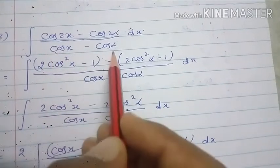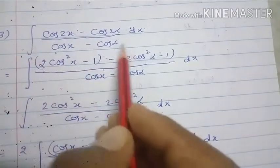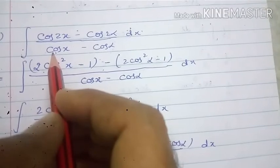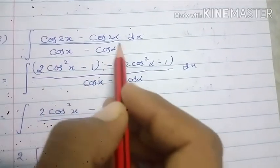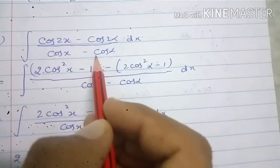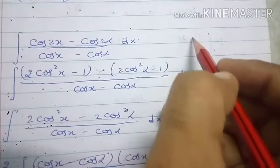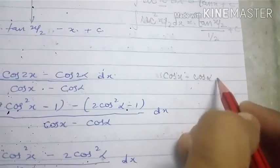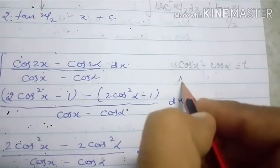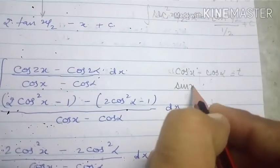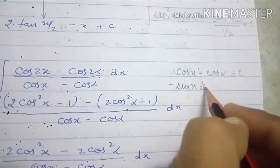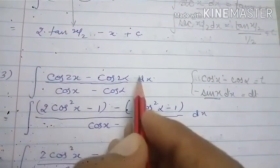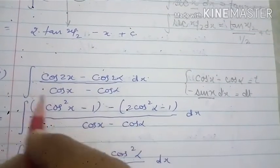Denominator mein hamen kaise bhi karke single term chahiye, aur agar single term nahi hai to hamen isse cancel karna hai ya is complete term ko t consider karna hai. Agar hum cosx - cosα ko t maan lete hain, to uska derivative hamare paas available nahi hoga — cosx ka differentiation -sinx dx hota hai, aur yah sinx ki term hamare expression mein available nahi hai. Isliye hum t-substitution nahi kar sakte.